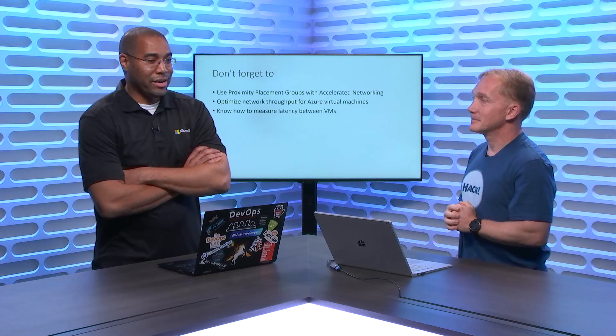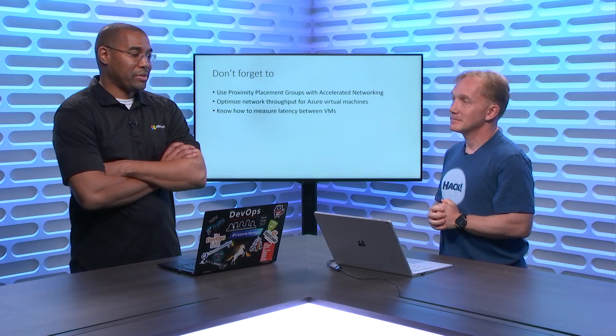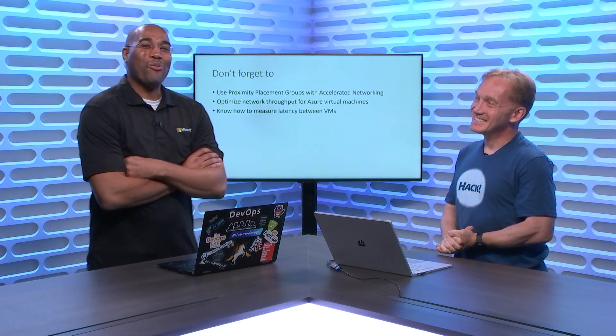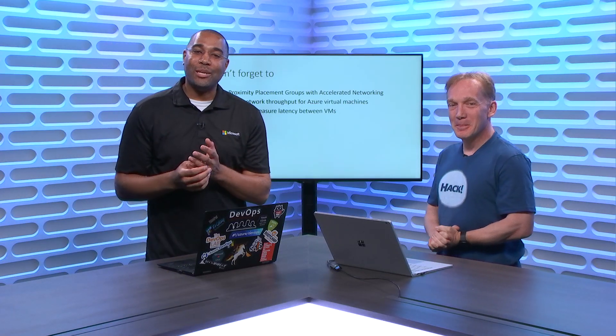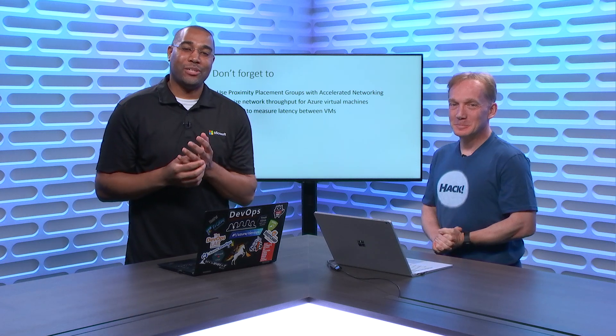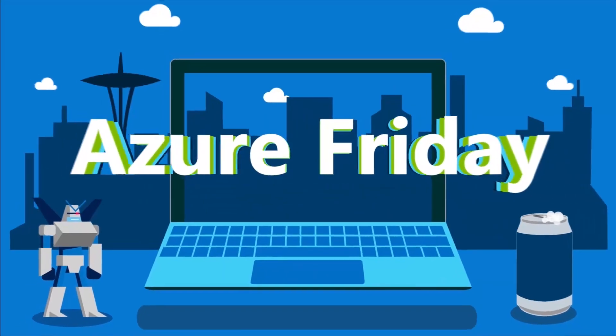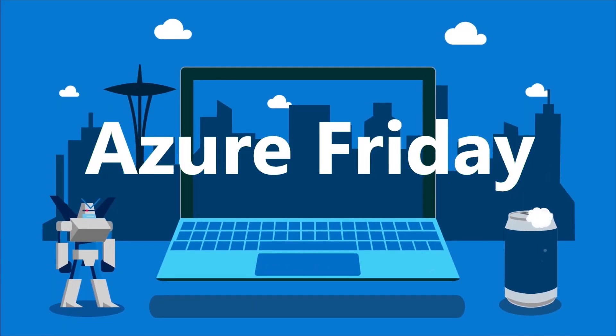That's very good advice — a lot of us would probably test by seeing how fast we can download something from one machine to another, but ping is not the way to test it either. We're learning all about proximity placement groups here on Azure Friday. We'll be right back.